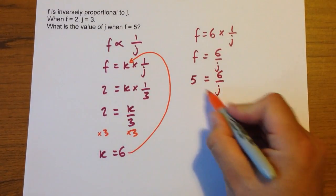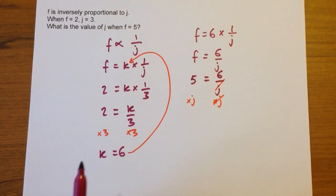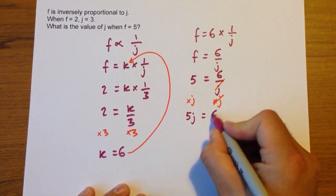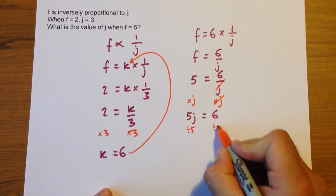So how do you get rid of the divide by j? We're going to multiply both sides by j. That's going to give us 5j equals 6. Now we need to get rid of this 5, so we're going to divide both sides by 5.